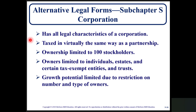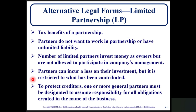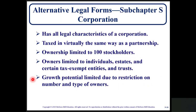One alternative form is a subchapter S corporation. It has all the legal characteristics of a corporation but is taxed virtually the same way as a partnership, so there is no dual taxation. Ownership is limited to 100 stockholders, and owners are limited to individuals, estates, and certain tax-exempt entities and trusts. Growth potential is limited due to restrictions on the number and types of owners — that is one of the disadvantages of S corporations.